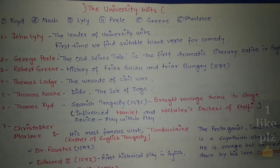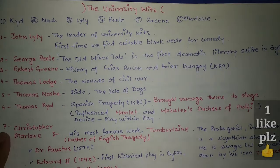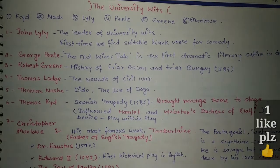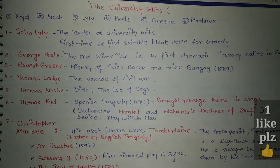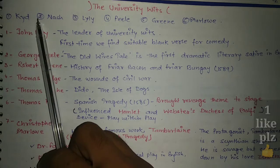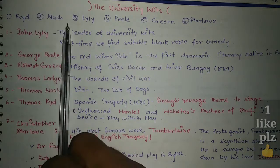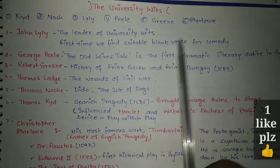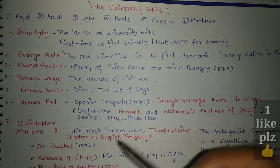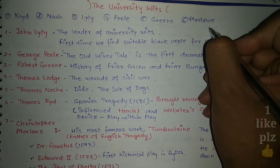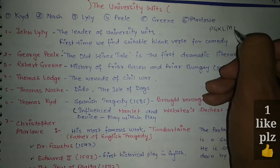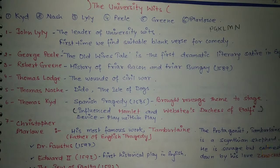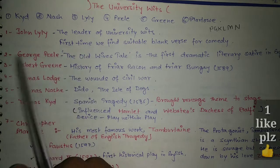Now let's talk about University Wits. University Wits were a group of writers who graduated from Oxford. The names are: Kyd, Nash, Lily, Peele, Greene, and Marlowe. A shortcut to remember these names is P-G-K-L-M-N. The first is John Lily.